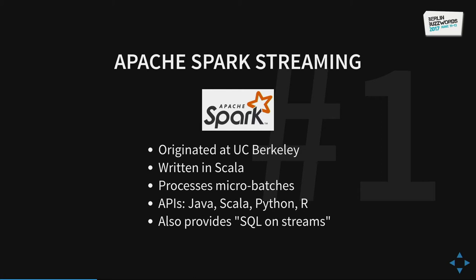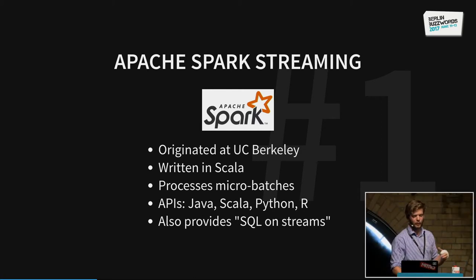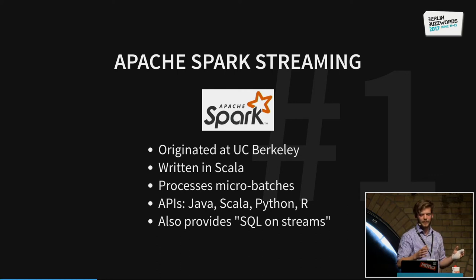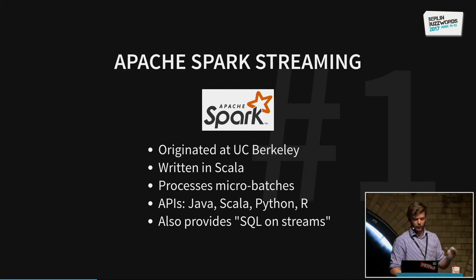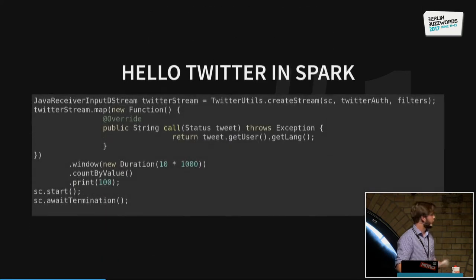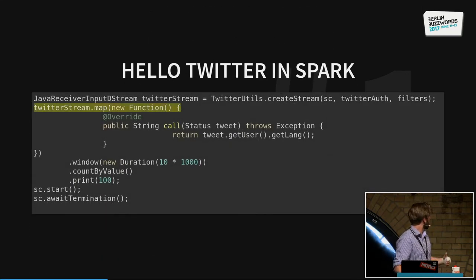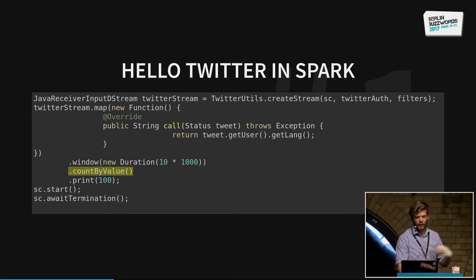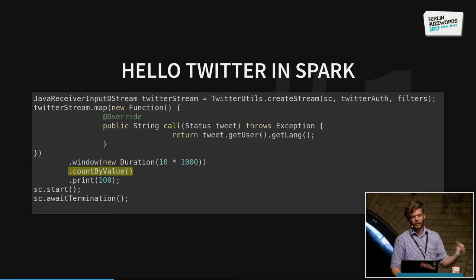The last one is Spark, which is from UC Berkeley, written in Scala. Spark is different in that it processes micro-batches — you configure a parameter of, say, 10 seconds, and then every 10 seconds it reads the data in and processes all of it. When it's done, it takes the next 10 seconds. Spark also has SQL on streams as one of its newest features. Spark looks very similar to Flink: you have a map function, a window, count by value, and emit. So the basic things you want to do, you can do on all of them — they look similar from the code, though some do micro-batching and some do record-at-a-time processing.